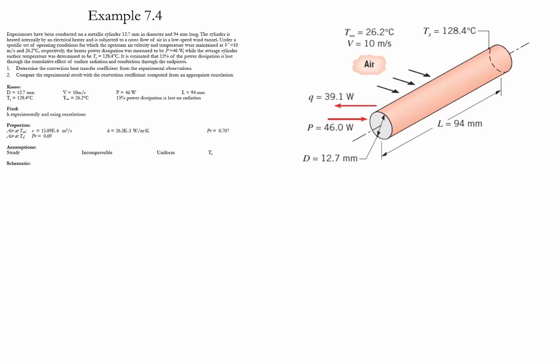Example 7.4. In this example we have a metallic cylinder with a length and diameter provided. The cylinder is heated internally by an electrical heater and is subjected to a cross flow of air at low speed.